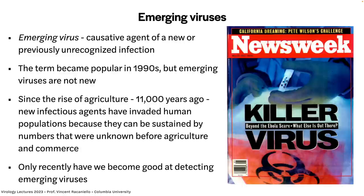Before agriculture, we couldn't feed a lot of people living together, so we existed as hunter-gatherers in bands of a few hundred individuals, not in towns. It was more difficult for viruses to spread among those small groups. But agriculture made it possible to feed large numbers of people, and since then viruses have emerged into humans. Recently, we've gotten really good at detecting emerging viruses.